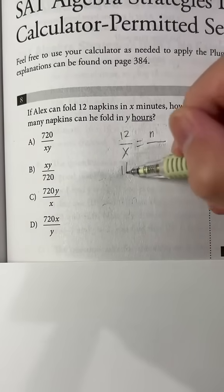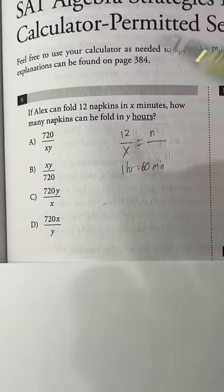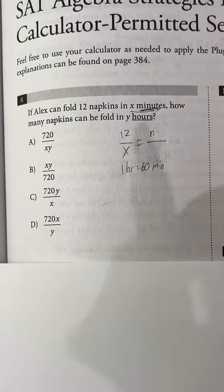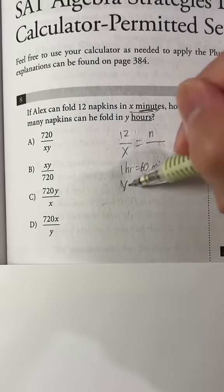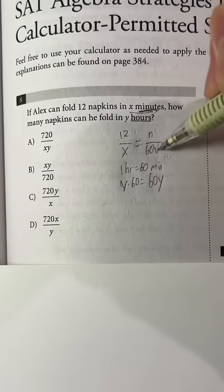But we also know that one hour is equal to 60 minutes. So we can have the same units since we have x minutes here. So we can do y times 60, which is equal to 60y. So we have 60y minutes.